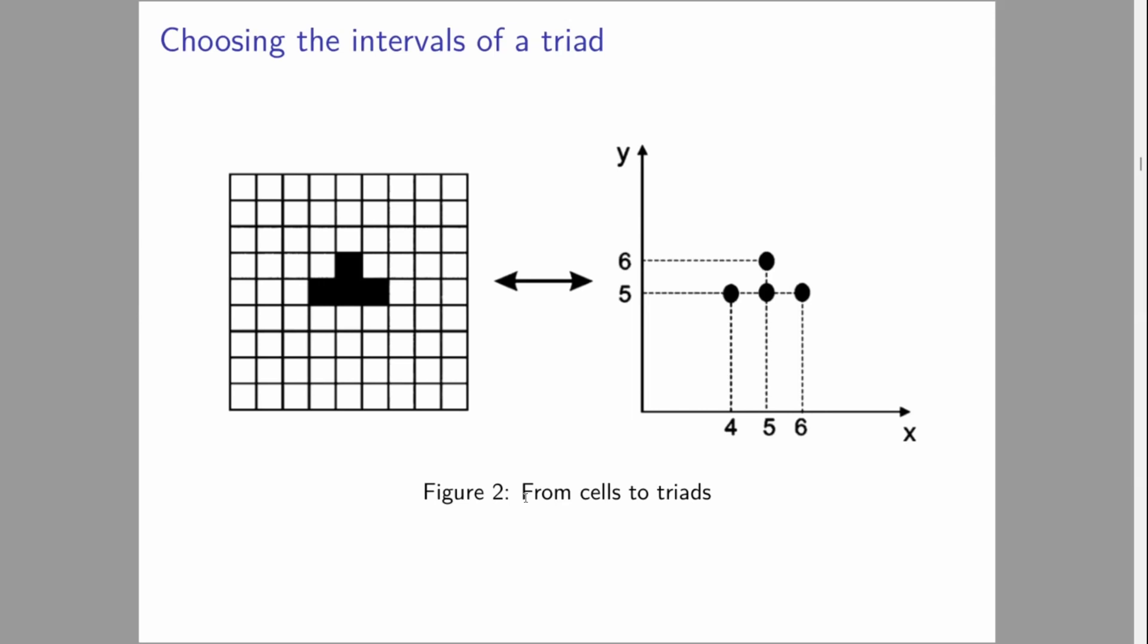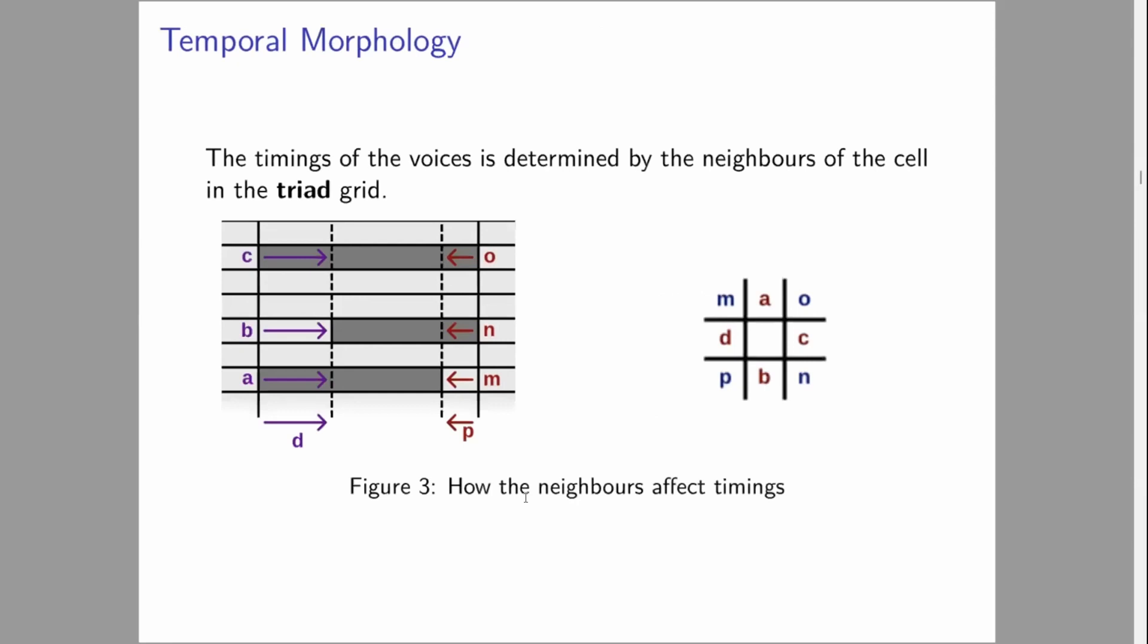That's the intervals between the notes in the triad. We can also shift timings. We can decide which voices should join the triad and when, essentially stagger an entry and stagger the exit. The way we do this in our system is to look at the cell we're looking at in the center, then label its neighbors by that diagram on the right. The value at A determines whether the bottom voice will be delayed. The value at B determines the middle voice, C determines the upper voice. The value at D determines how big that delay is. We can end voices early with O, N, M and P.